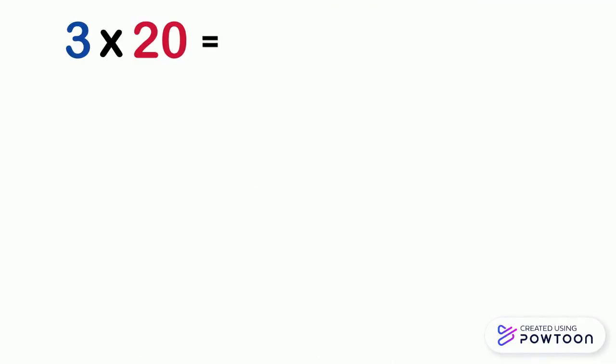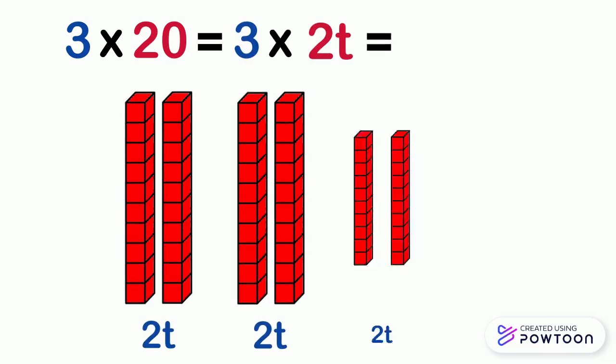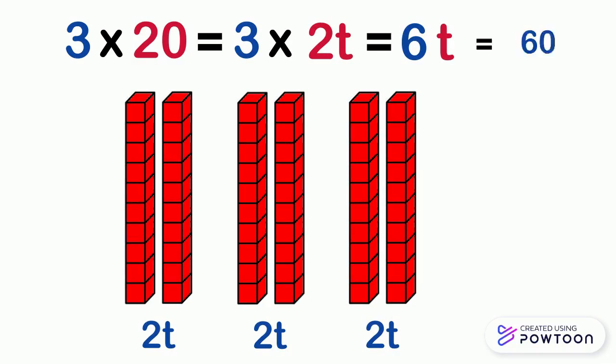How to multiply 3 by 20? We know that the number 20 equals 2 tens, so 3 times 20 is 3 times 2 tens, which is equal to 6 tens, which is equal to 60, so 3 times 20 equals 60.